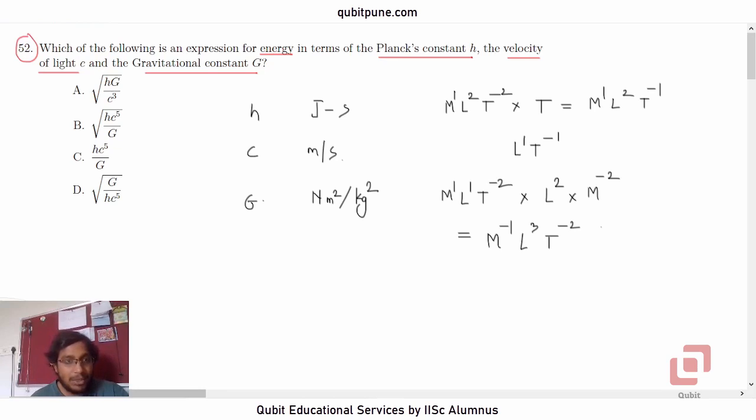Now, what we can do is we can actually consider h c raised to 5 by G, because that appears in b, c, and d. So let us consider the expression h c raised to 5 by G.